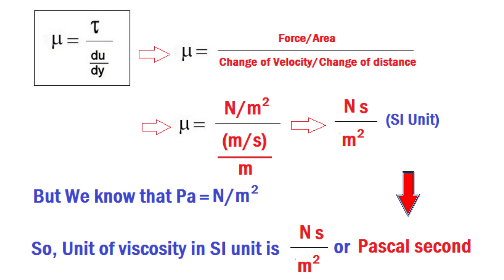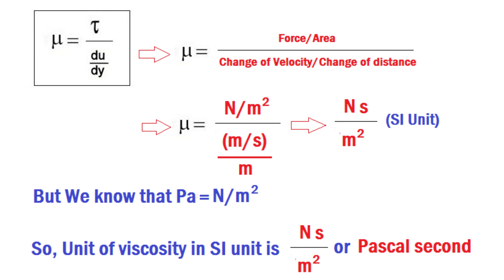To derive the unit for viscosity: mu = tau / (du/dy). Shear stress is force per area, and du/dy is change of velocity per change of distance. The unit of force is newton, area is meter square, velocity is meter per second, and distance is meter. Substituting all units into the equation for mu and simplifying, the unit of viscosity is newton·second per meter square in SI unit.